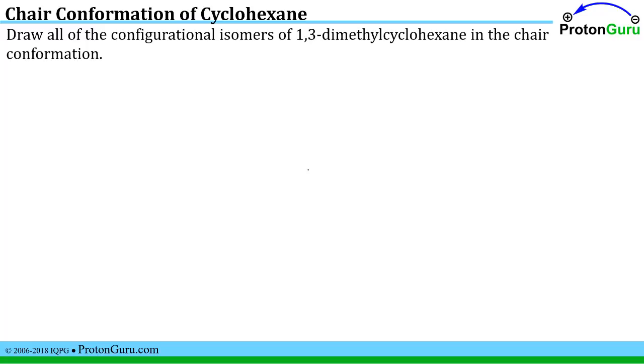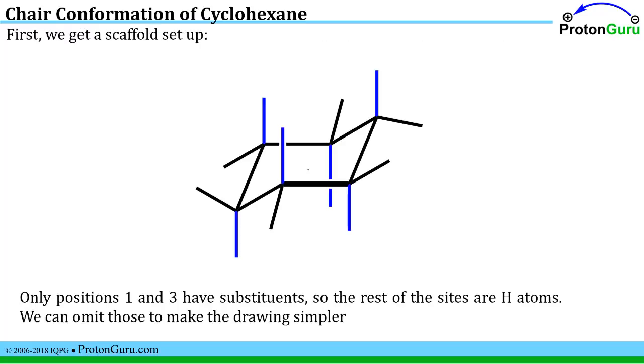So here we're asked simply to draw all the configurational isomers of 1,3 dimethyl cyclohexane. Well all these problems are going to require us to be able to set up the scaffold and know what units have equatorial and axial positions available.